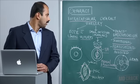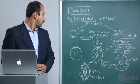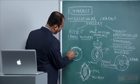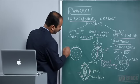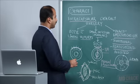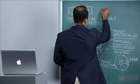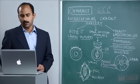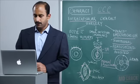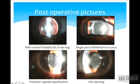Capsulotomy is essentially a can-opener capsulotomy in ECCE, although a continuous curvilinear capsulorhexis (CCC) can be practiced in all cases. CCC involves making a circular opening in the anterior lens capsule. This is followed by implantation of an intraocular lens in the capsular bag — this is considered the ideal outcome after cataract surgery.